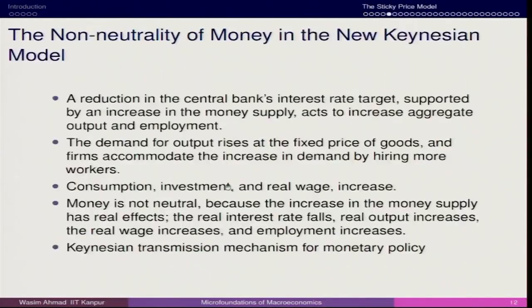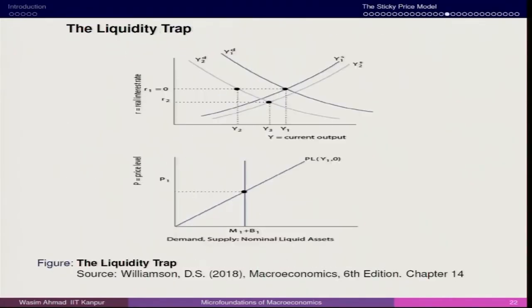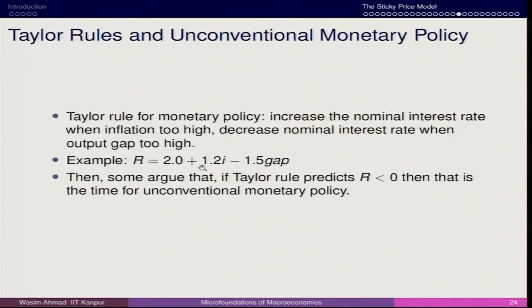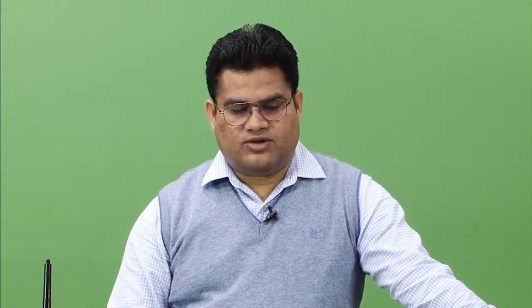Here we will be talking about the Taylor Rule. John Taylor developed this idea of what will be the appropriate monetary policy rule through which the central bank decides about the appropriate policy rate. The Taylor Rule for monetary policy involves increasing the nominal interest rate when inflation is too high.